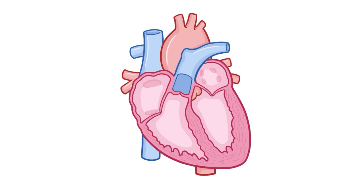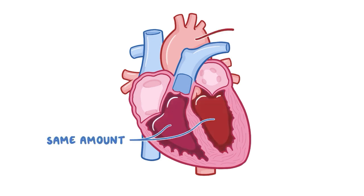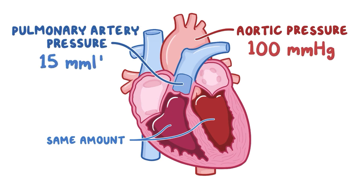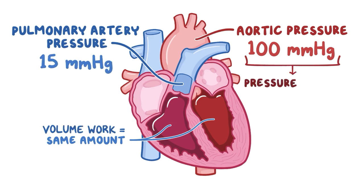It's also interesting to look at the difference between the two ventricles with regard to the pressure work they normally perform. Even though both ventricles pump the same amount of blood, the left ventricle has to overcome the mean aortic pressure of about 100 mmHg, while the right ventricle pressure needs to surpass pulmonary artery pressure, which is only 15 mmHg. So although the volume work of both ventricles is the same, the pressure work of the left ventricle is greatly increased. Normally, the left ventricle wall is thicker than the right ventricle wall, because it performs more pressure work and therefore requires more oxygen.